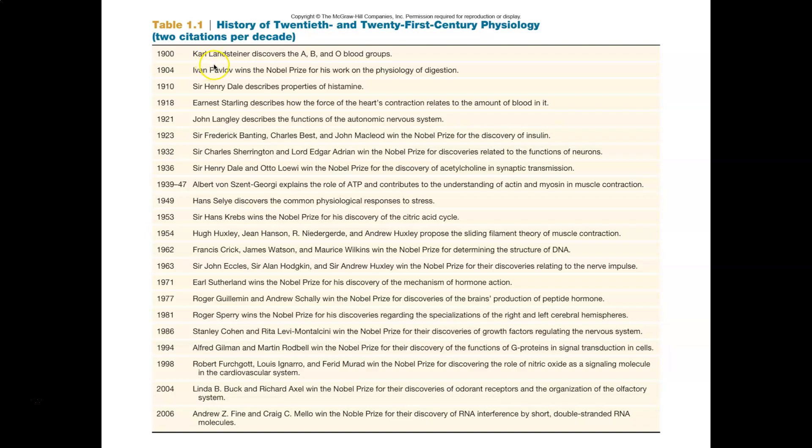If you continue to look at this table, you'll notice that the research gets progressively more advanced. When you get into the 1950s and 1960s, you start seeing Nobel Prizes being awarded for the discovery of the citric acid cycle and metabolism that takes place within the body.